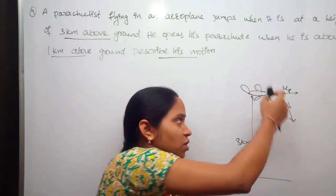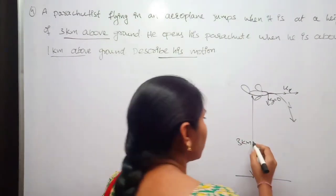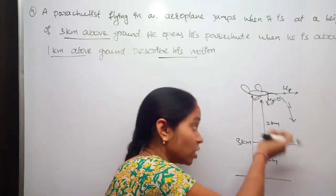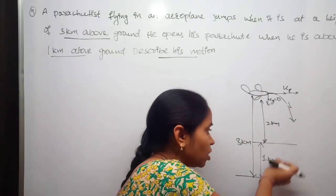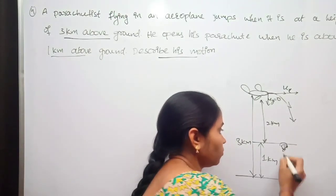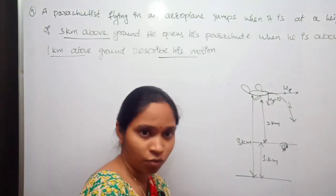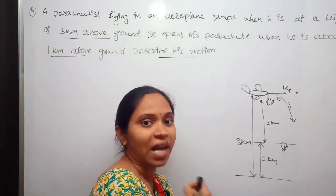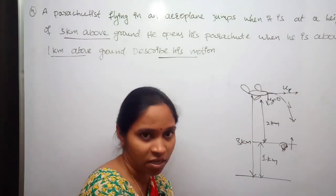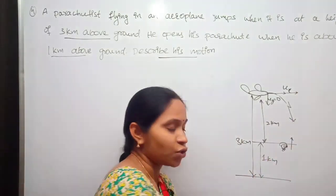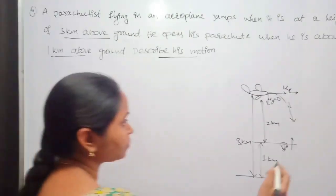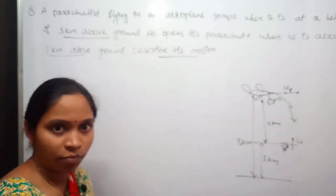Therefore the vertical velocity of this parachutist is equal to zero. After traveling two kilometers — that is, when he reaches one kilometer above the ground — he opens his parachute. Whenever he opens his parachute, there will be a drag in the opposite direction, which is known as viscous drag. There is a force applied on the parachute in the upward direction because of the air.